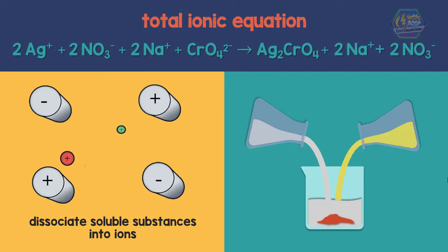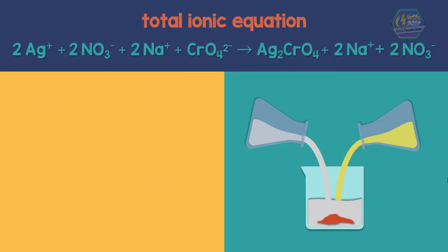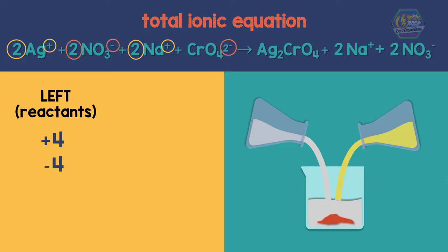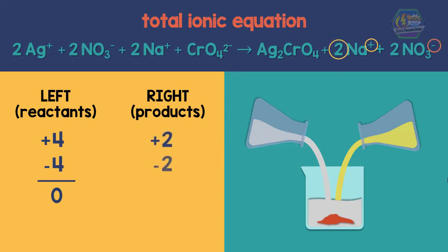As you notice in the equation, the elements are all balanced as well as the charges. On the left there are four positive and four negative which sums up to zero, and on the right two positive and two negative which also sums up to zero.